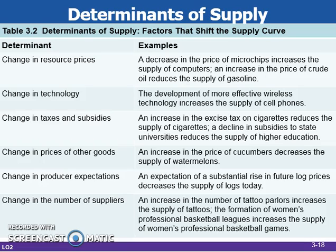If the price of another good that the producer could produce with the same resources increases, the supply decreases for the product the producers are currently producing. If the price of another good that the producer could produce with the same resources falls, the supply increases for the product the producers are currently making. If producers expect that the price of the product they are making will be higher in the future, they increase current supply to take advantage of the currently high prices.